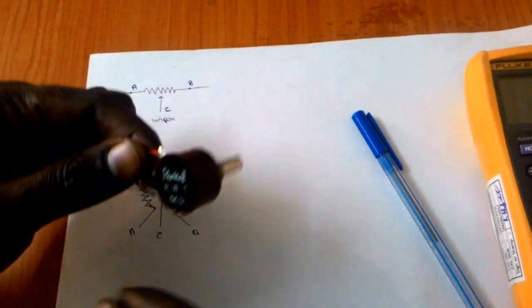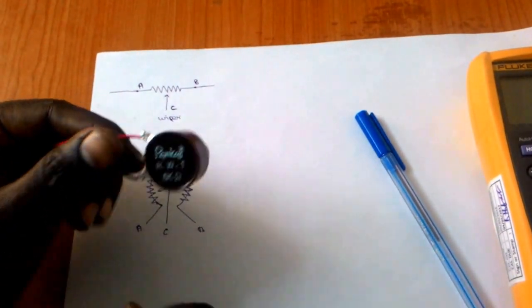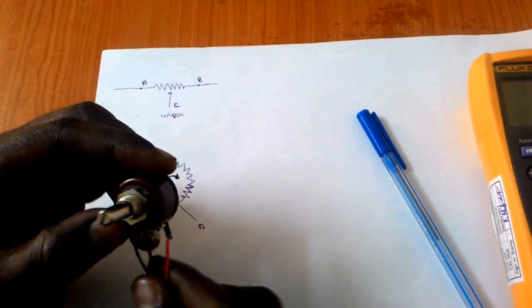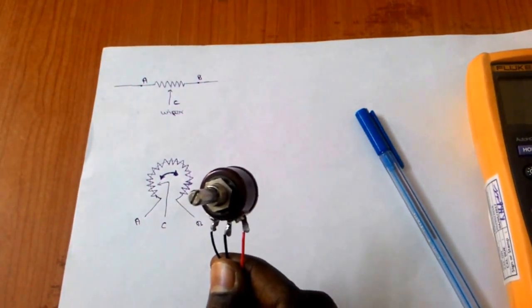See this back side is mentioned, right? See, 5k pot. That means the total resistance of this potentiometer is 5 kilo ohm.